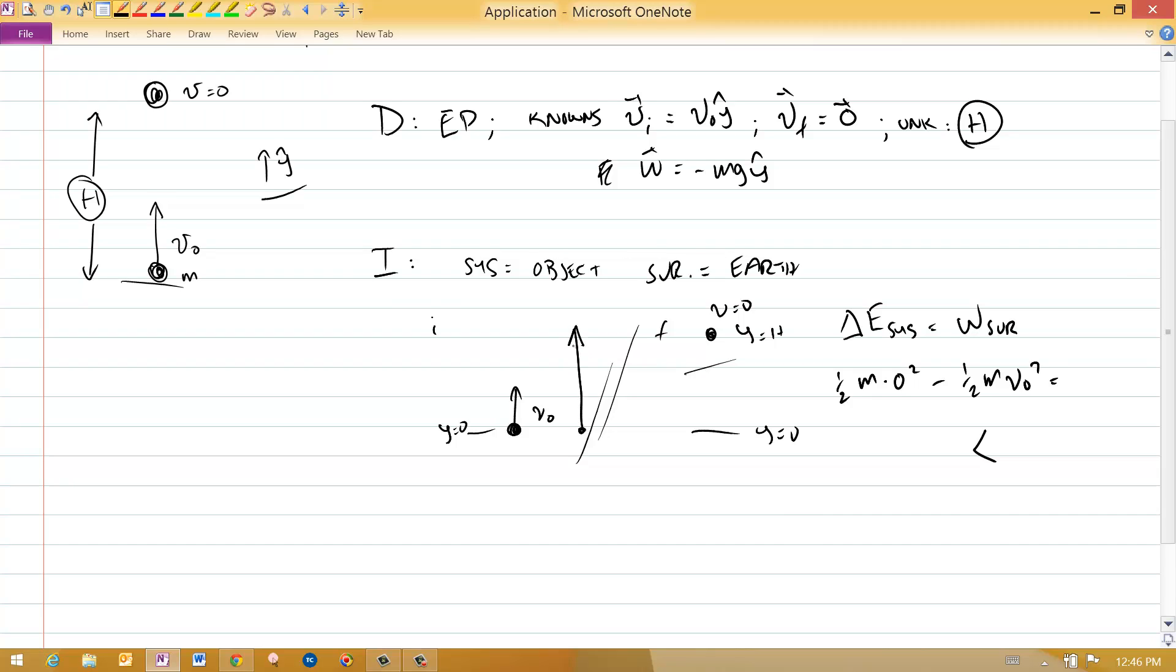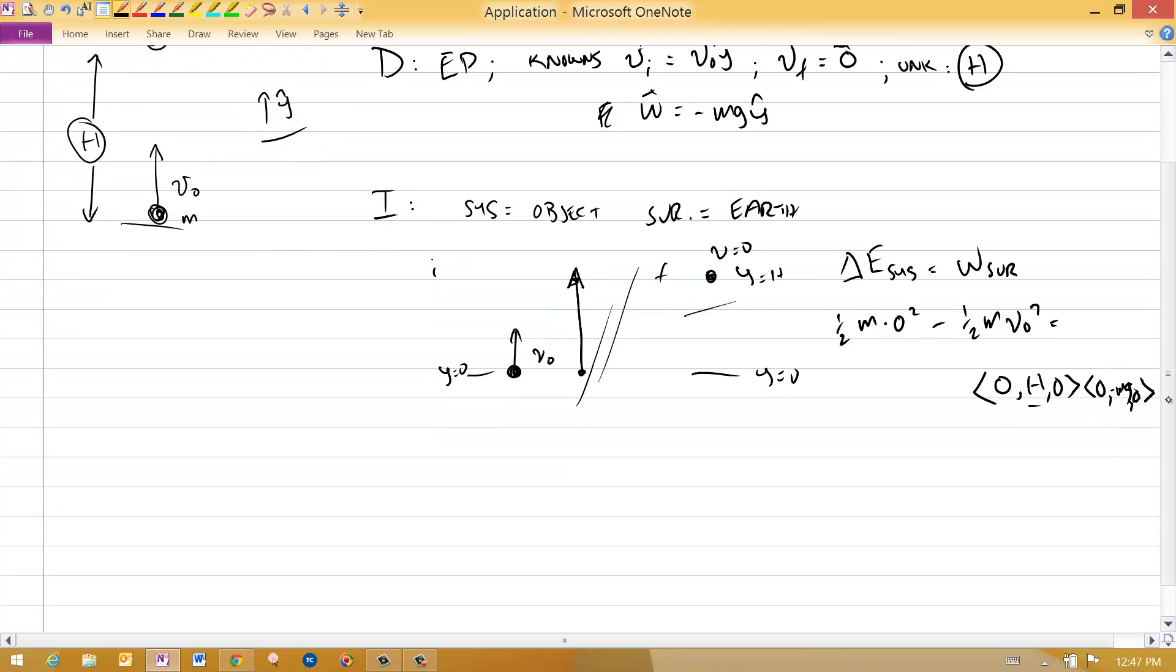I've got a displacement, like so. It takes me from the ground to the top, and I've got a force. My displacement is 0, h, 0. That's h in the y component. And then the force is 0 minus mg, 0. That's the weight.